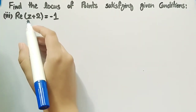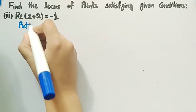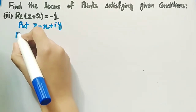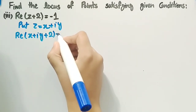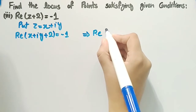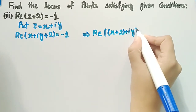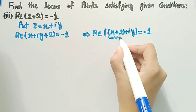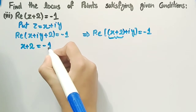The third condition is: real part of z plus 2 is equal to minus 1. Firstly, we will put z equal to x plus iota y in this equation and we get real part of x plus iota y plus 2 equal to minus 1. We can also rewrite it as real part of x plus 2 plus iota y equal to minus 1.